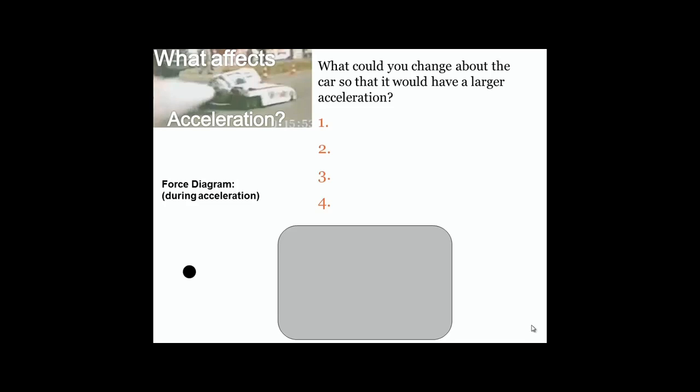So let's think about what things affect the acceleration of that water rocket car that we just saw in the video. To do that, let's see if we can answer this question: What could you change about the car so that it would have a larger acceleration? If you were an engineer and you could make some design decisions or changes, what could we modify that would allow the car to have an even greater acceleration than it already does?